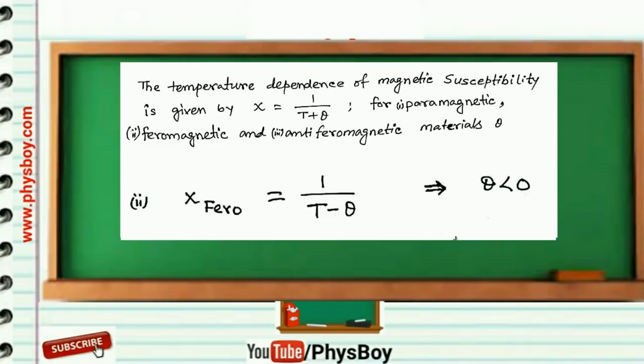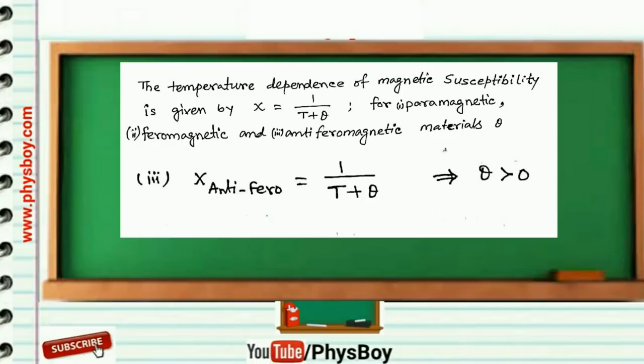Susceptibility for antiferromagnetic material varies as 1 over T plus theta. Again, comparing the given susceptibility in the question, we get theta must be greater than or equal to 0.